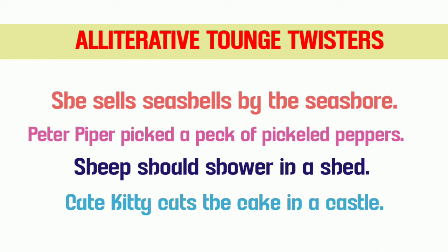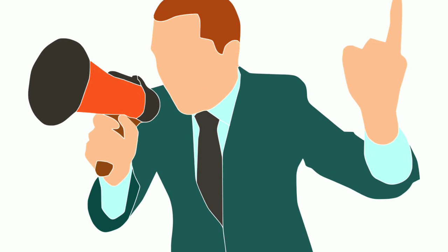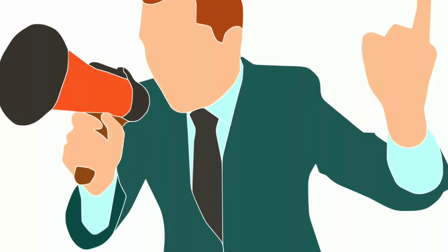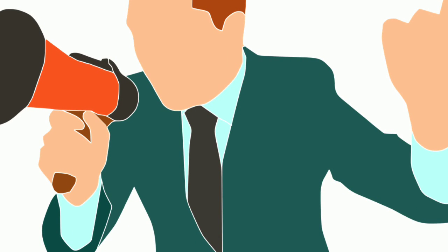Alliterative examples kyun use karte hain? Most writers, poets, novelists, essayists — sab apne prose mein bhi use karte hain. Kyunki yeh thoda sa pleasing sound hai sunne mein — sound bahut pleasing hota hai. Aur jo listener aur reader ka attention grab karta hai. Teesri cheez — melody aur rhythm ko create karta hai.